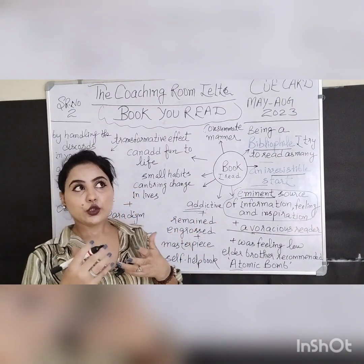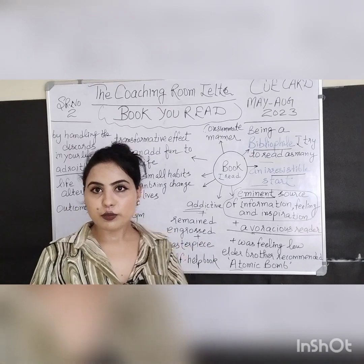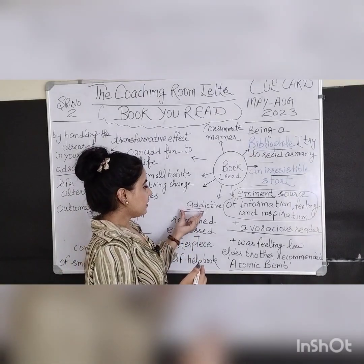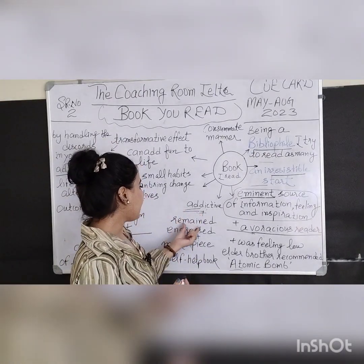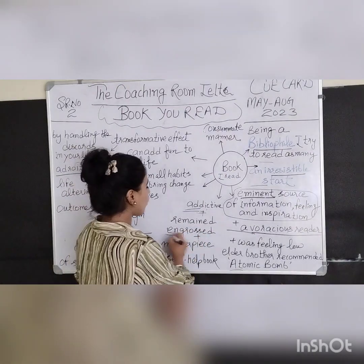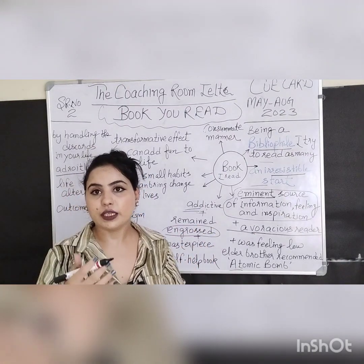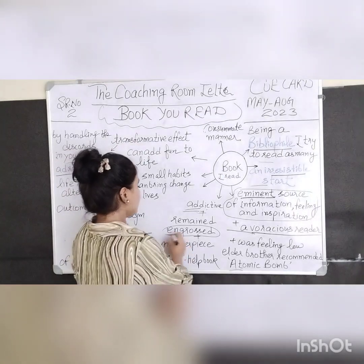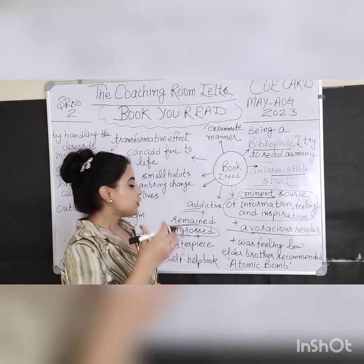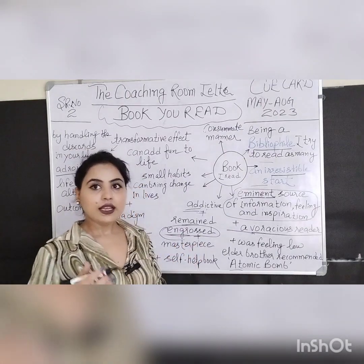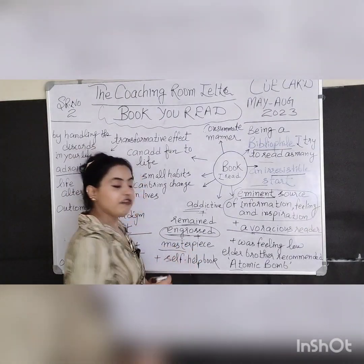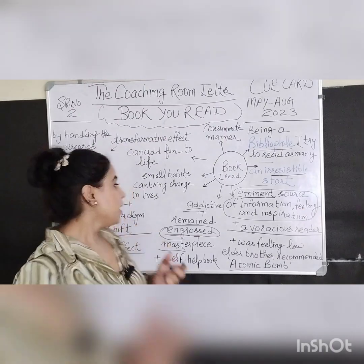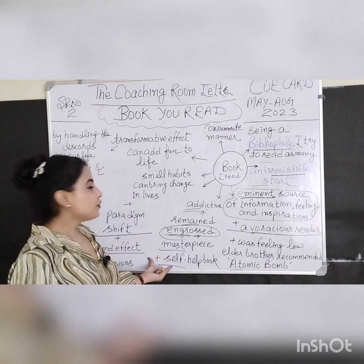Addictive means you really liked the content and couldn't stop yourself from reading it. You can say, 'I found it addictive and remained engrossed.' Engrossed means you were completely involved in the book. You can say that you were fully involved and found it a perfect masterpiece. If I say it is a self-help book, it won't be wrong, because I really found that book useful for me.